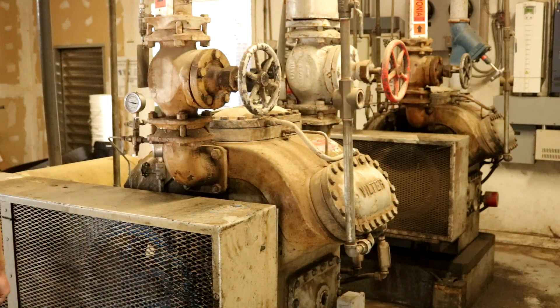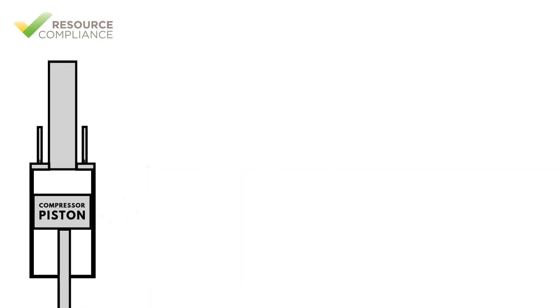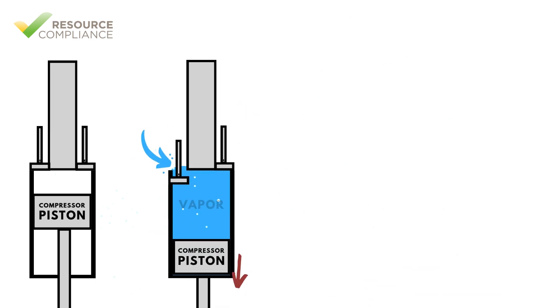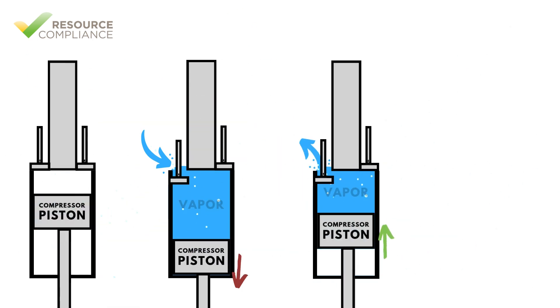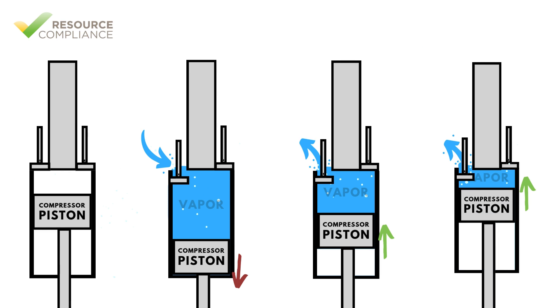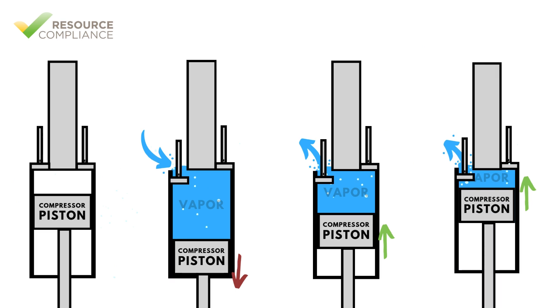Cylinder unloading is accomplished by forcing one or more cylinder suction valves open. During the intake stroke, vapor will be drawn into the cylinder, but since the suction valve is forced open, no compression will take place during the compression stroke and the vapor will simply exit through the suction valve from which it entered.